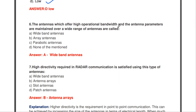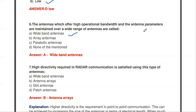The next question: antennas which offer high operational bandwidth and whose antenna parameters are maintained over a wide range of frequency are called dash. The answer is wideband antennas. The bandwidth is very high and antenna parameters are maintained across that wide frequency range.